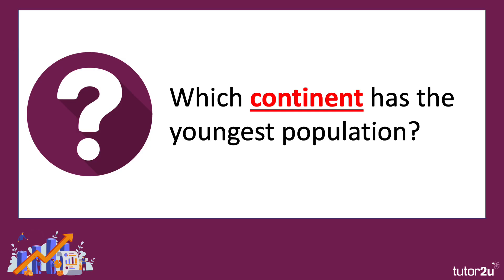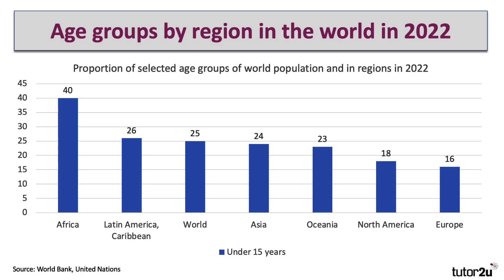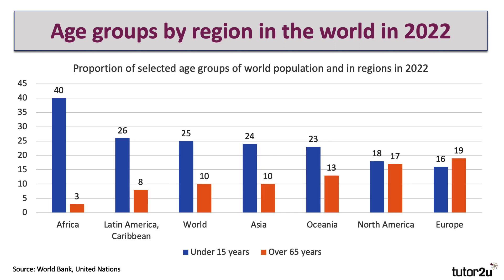Demography focuses heavily on the age composition of a country's population, and the median age is a good guide to changes in age structure. Which continent has the youngest population as measured by the median age? The answer is Africa. Take a look at this chart — 40% of people living in Africa are under 15 years old, and only 3% are over 65. Compare that with Europe, the only continent where the number of people over 65 is greater than the number of people under 15.